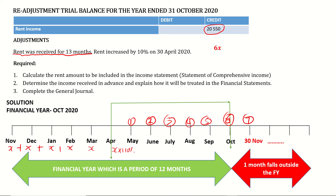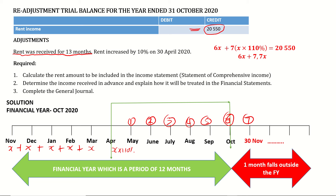Adding the first group gives 6x, and adding the seven months at 110 percent gives 7.7x. Together these equal the total rent received of R20,550. So: 6x + 7.7x = 20,550, which simplifies to 13.7x = 20,550. Divide both sides by 13.7 to find x.